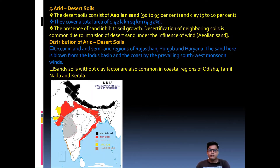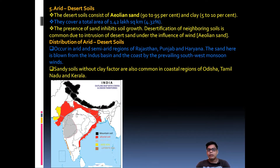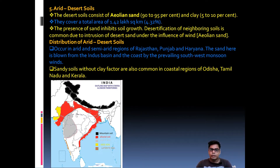Next is arid soil, also known as desert soil. Desert soil consists of aeolian sands — 90 to 95 percent sand and 25 percent clay. It covers 1.42 lakh square kilometers, which is 4.32 percent of the total soil area of India. The presence of sand leads to desertification of neighboring soils. Its distribution is in arid and semi-arid areas — mainly Rajasthan, Punjab, Haryana, and the northern portion of Gujarat.